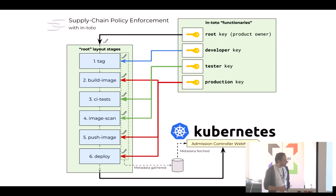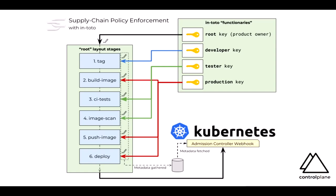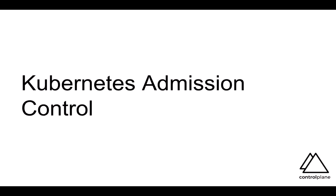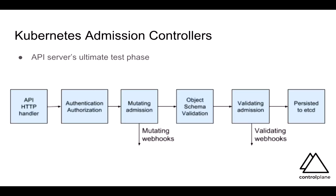This is the in-toto flow. As you can see, we've backed everything off with an admission controller webhook in Kubernetes, so at deployment time we're able to verify what we've been doing at build time.